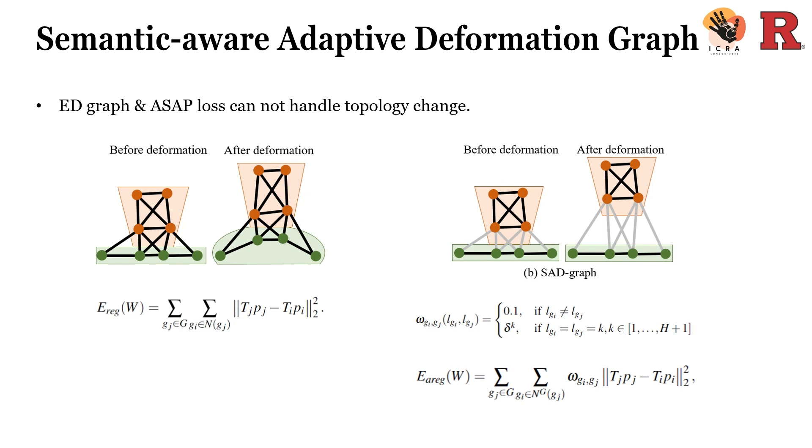However, this regularization has a drawback in terms of dealing with topological change. For example, if we pick up a cup from the table, when using ASAP loss, the table plane will also be picked up. Thus, we propose the semantic-aware adaptive deformation graph on the right side.